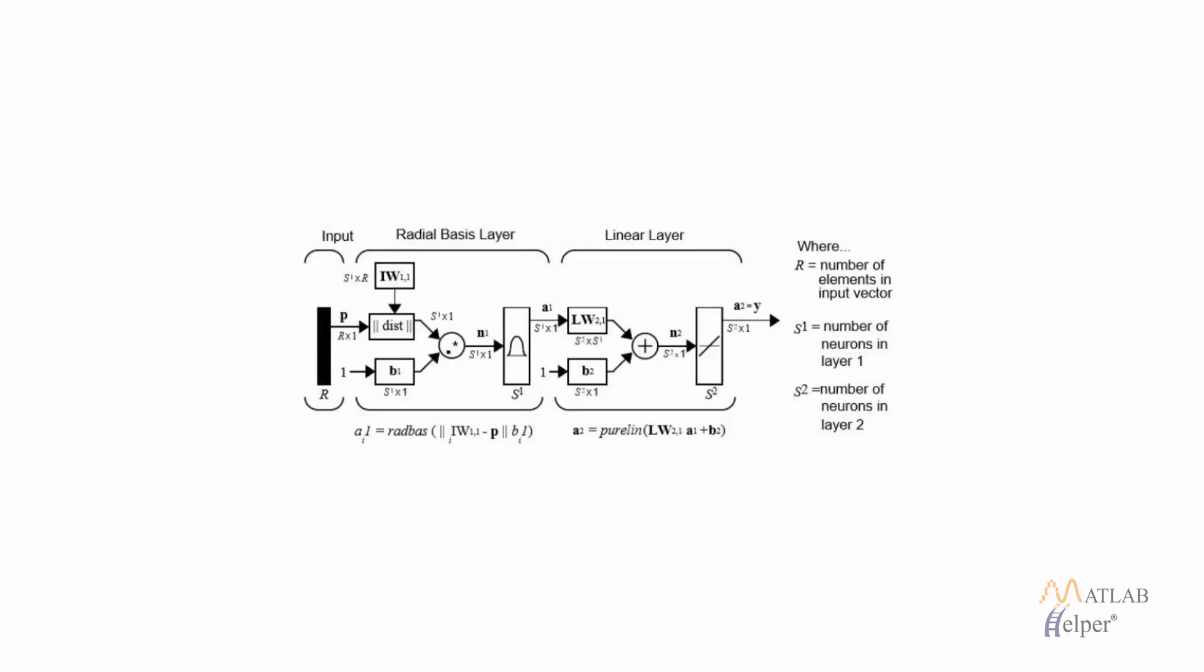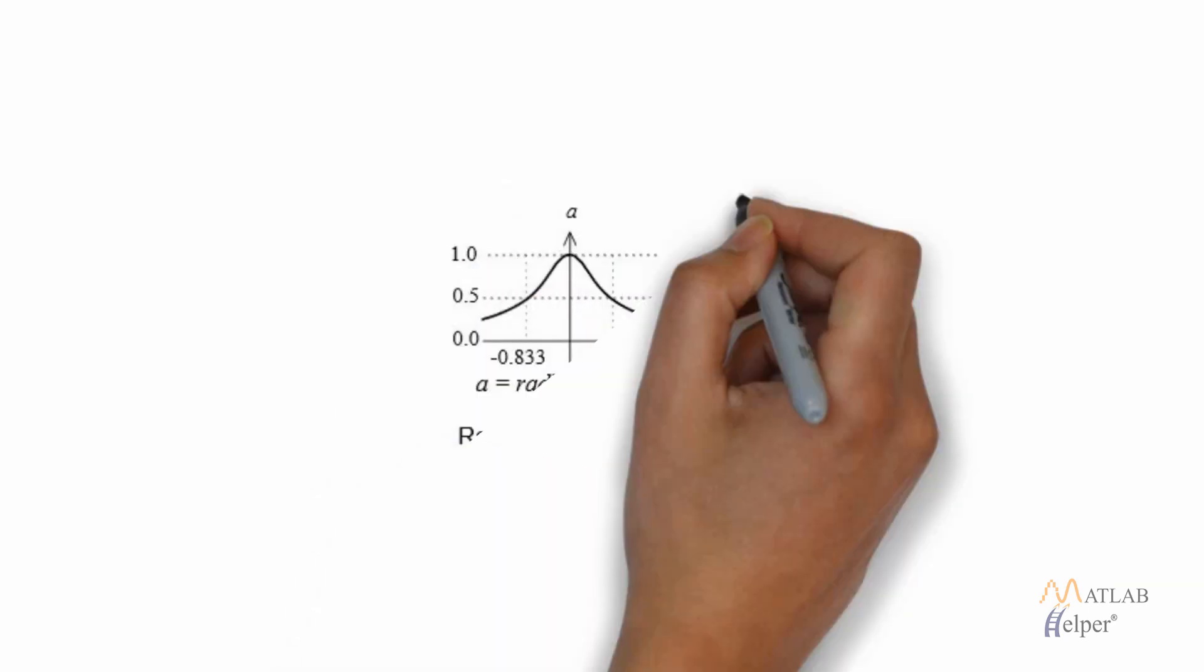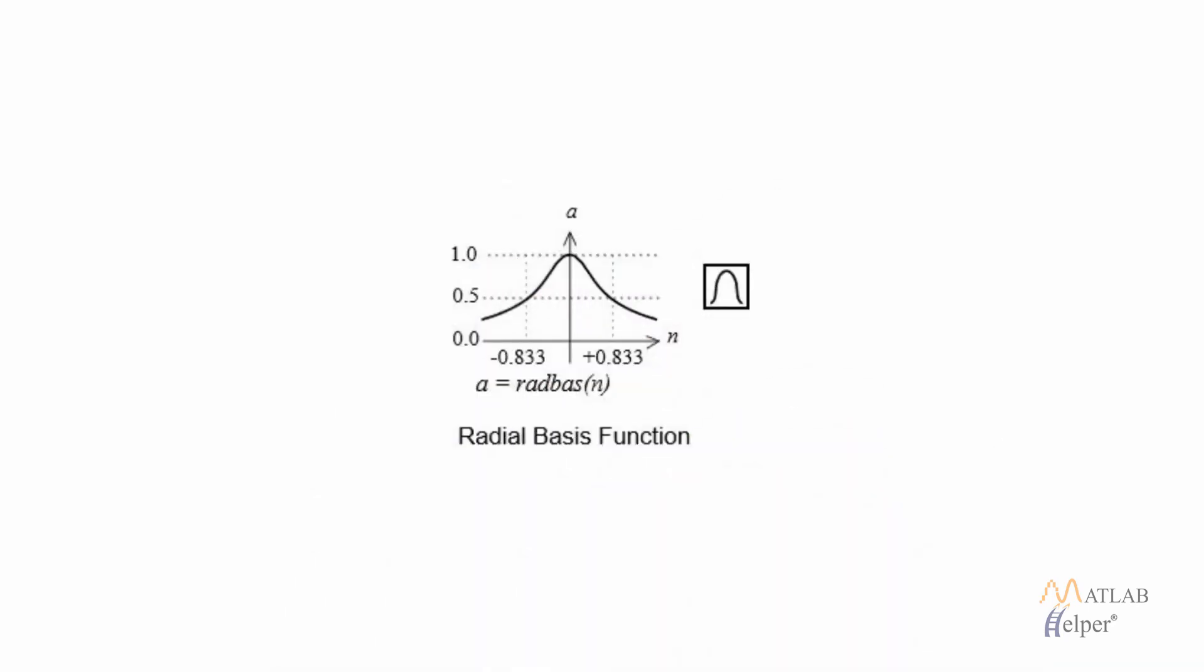After the positions are obtained, we obtain the Euclidean distance between the input vector set and the weights, and then we multiply it with bias to manipulate the sensitivity. The figure on the screen shows the plot of a radial basis function.